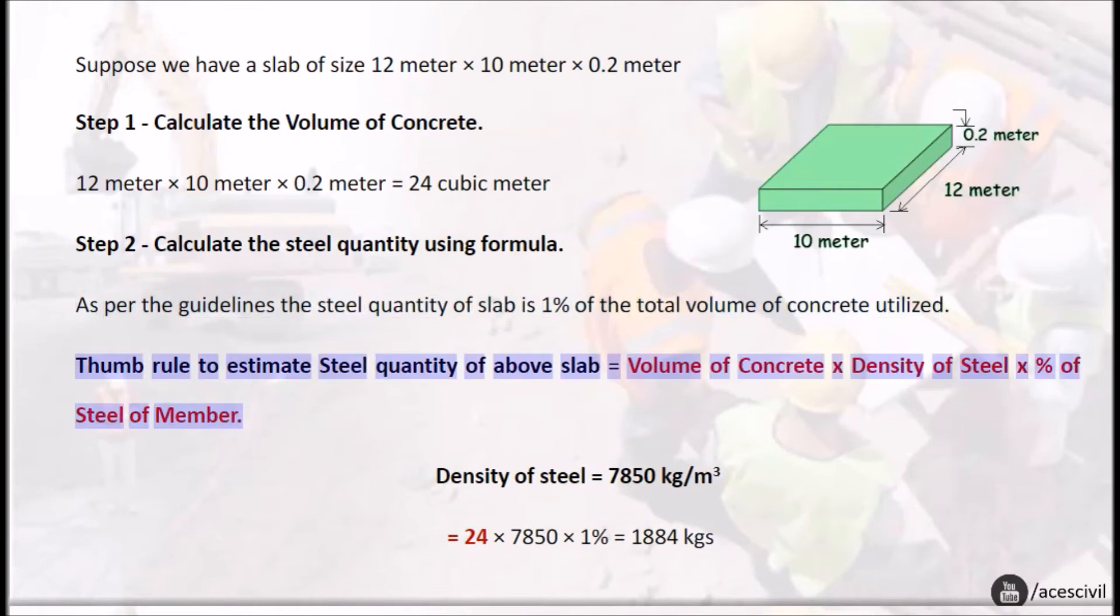Thumb rule to estimate steel quantity of above slab equals volume of concrete times density of steel times percent of steel of member. Density of steel equals 7850 kilograms per cubic meter. Equals 24 times 7850 times 1% equals 1884 kgs.